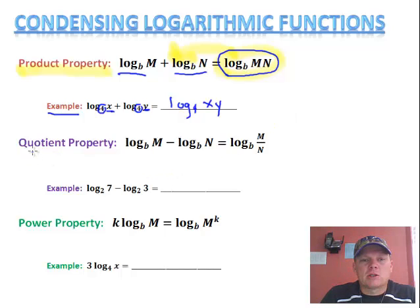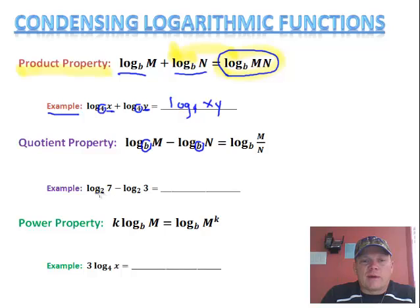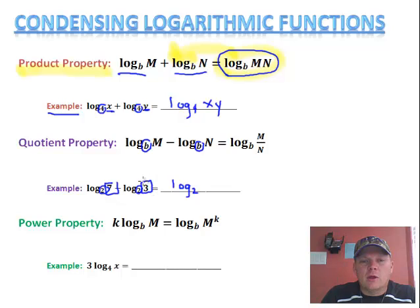The second property is the quotient property. The quotient property says if I subtract where I have the same base for the log and I subtract, I just divide those. So if I have log base 2 of 7 minus log base 2 of 3, since they're both log base 2, I can go ahead and condense these down and make it log base 2. Since it's subtraction, I will divide these. The one that's positive always goes on top, kind of like when we did exponents, and the one that's negative is always going to go in the bottom of the fraction.